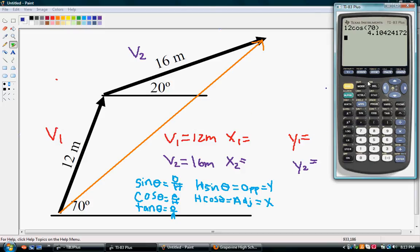And we get 4.10. Now, let's make sure we are in degree mode. So, we can write 4.1 for our first x. And for our first y, we can actually use 12 sine theta. So, this is going to be 12 sine 70 degrees. And we get 11.3.